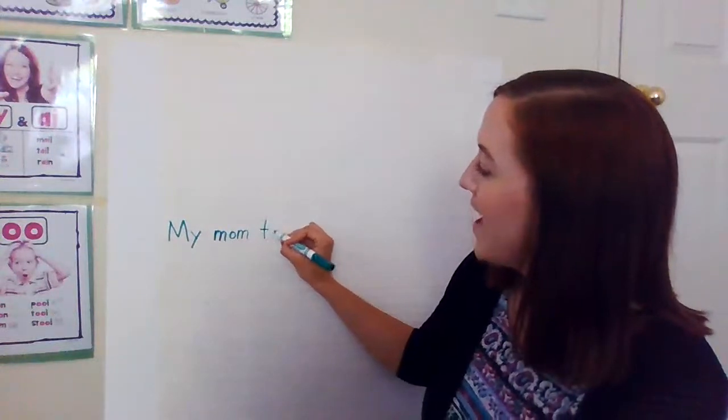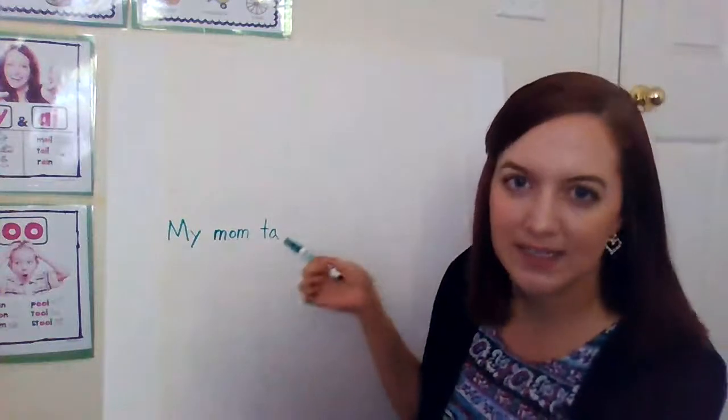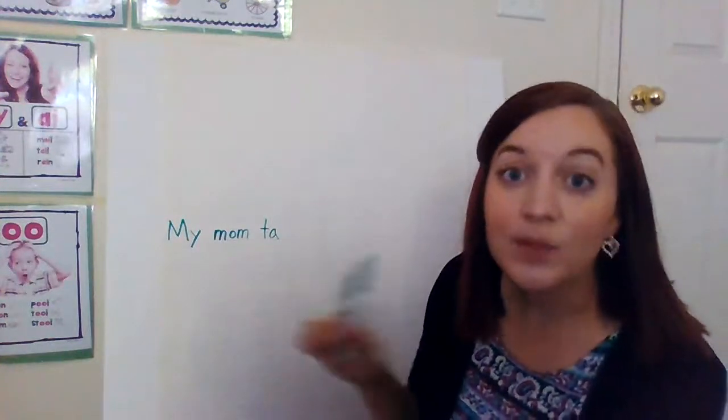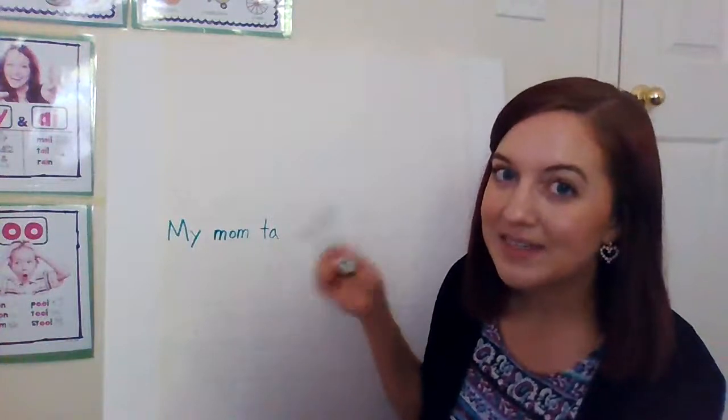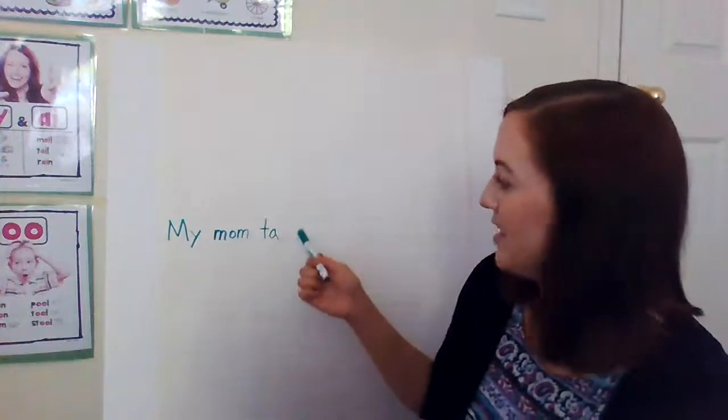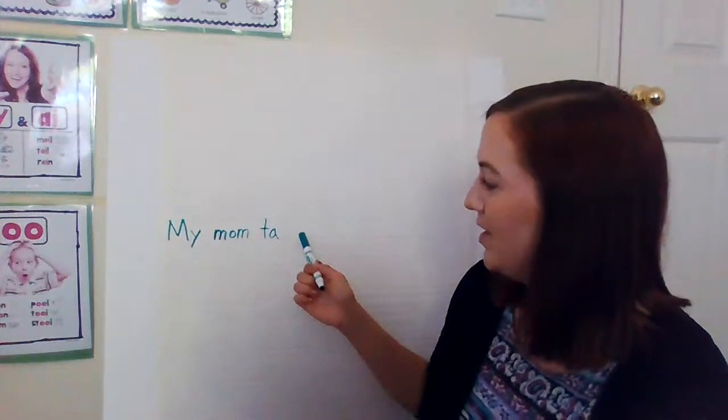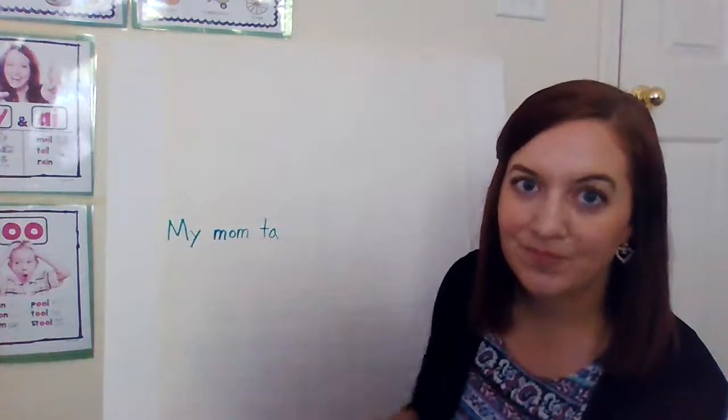So let's sound this out. T-A. Now what do you think is gonna make the K sound? It could be a C or it could be a K. So now we have to think why is A saying its name? So what's one of the things that happens at the end of a word or towards the end of a word that will reach over and tell A to say its name?